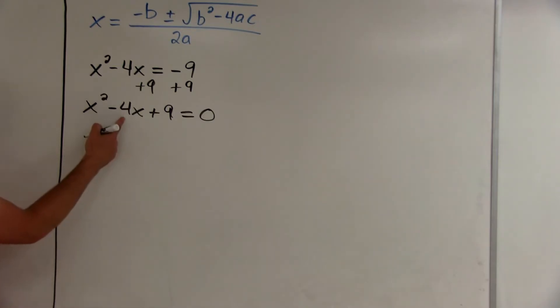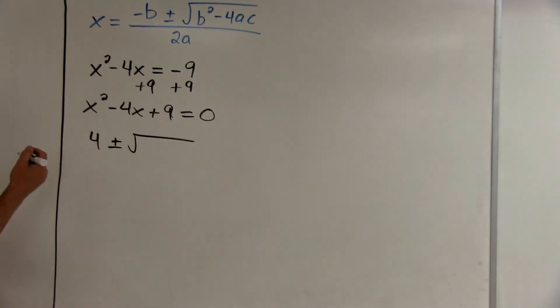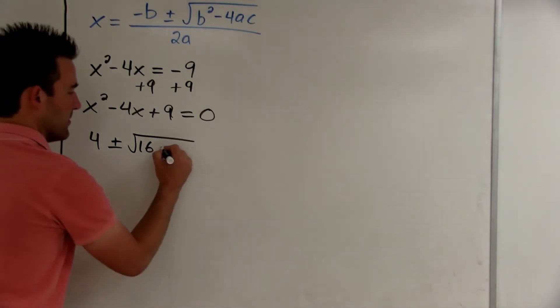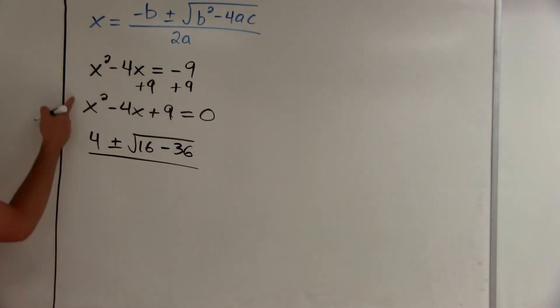So negative negative 4, which would be the negative b, is a positive 4. Plus or minus. Negative 4 squared is 16, minus 4 times a, that would be 4, times 9, that would be 36. So minus 36. All over 2 times 1.